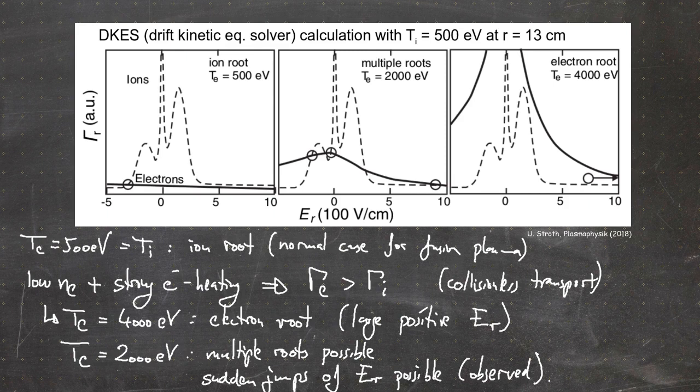That was a final example of electron and ion transport shown at the W7-AS stellarator. That's basically it for the video, where I just wanted to make a few comments about the ambipolar electric field, show an example from W7-AS, note that multiple solutions are sometimes possible for a stable situation, and that the radial electric field can jump between these solutions. Hope to see you in the next video.